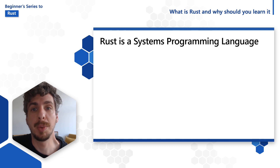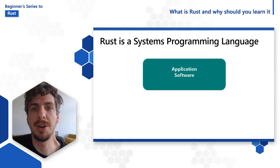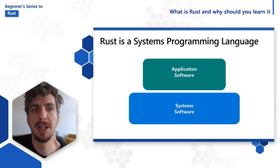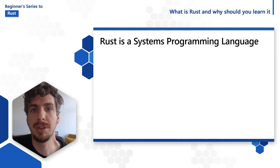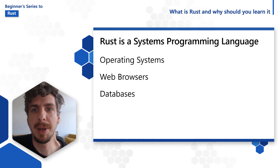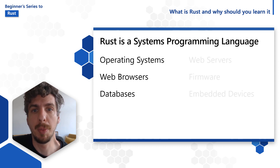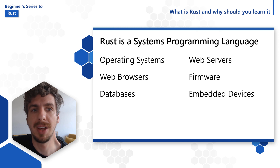Rust is a language used to build the software that powers the underlying systems that other software runs on top of. This typically means things like operating systems, web browsers, databases, low latency web servers, firmware, small embedded devices, and other such low-level programs.